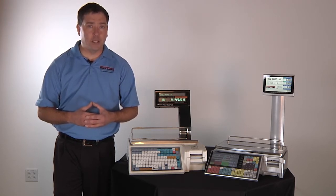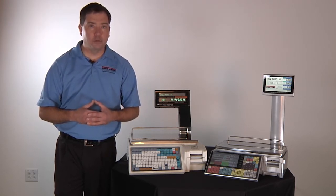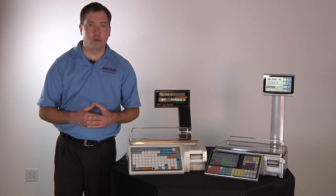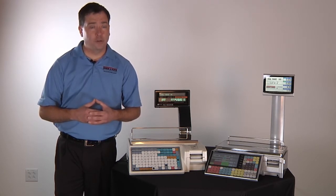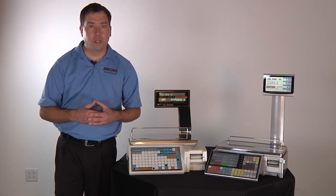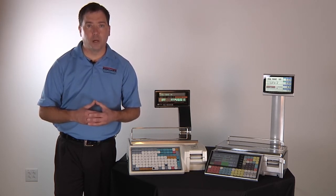This increased accuracy will allow you to capture a few cents on many of your transactions that you're currently not achieving with a scale that reads by 0.01. 0.005 also allows you to program finer tare weights into the scale. This will also increase your bottom line.